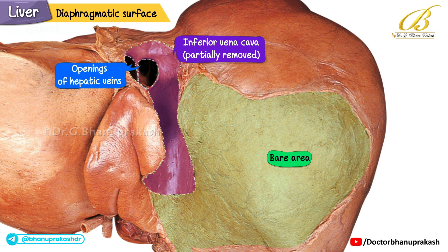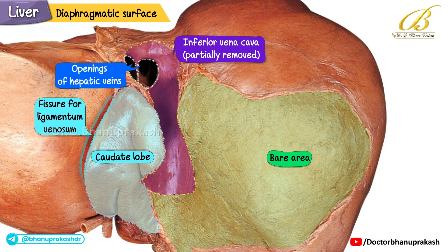Between the groove for the inferior vena cava and the fissure for the ligamentum venosum, above the porta hepatis, lies the caudate lobe, with the fissure for the ligamentum venosum situated just to its left.